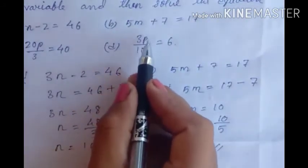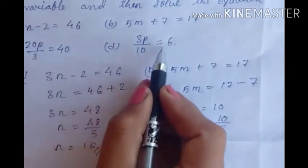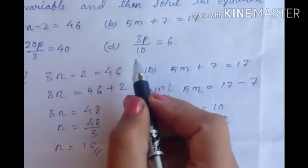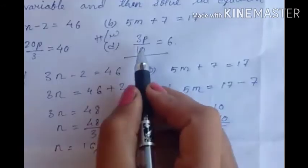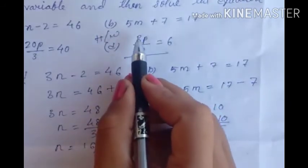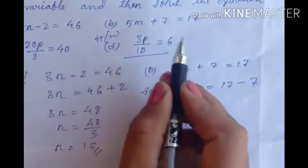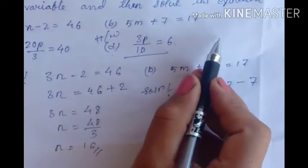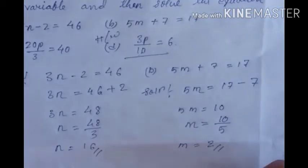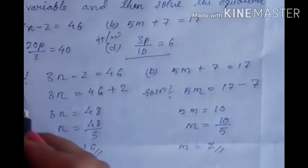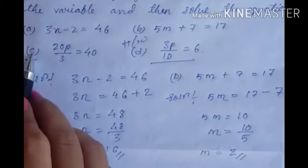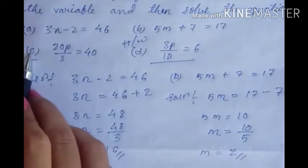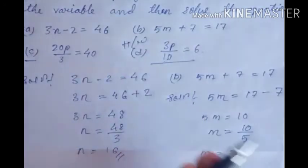Question D: 3p upon 10 equals 6. This is your homework. You will transpose the constant and the coefficient to the right hand side and find the value of p. The steps are the same as question C.